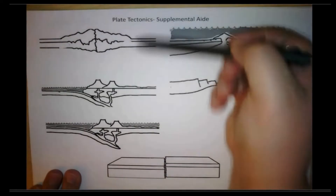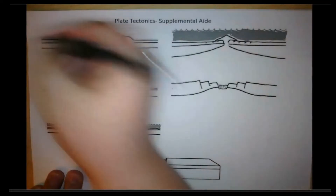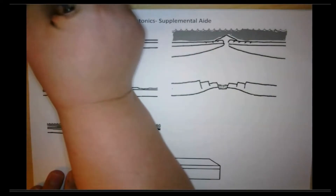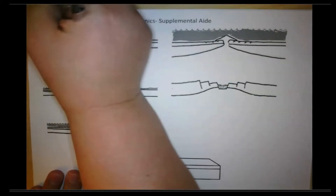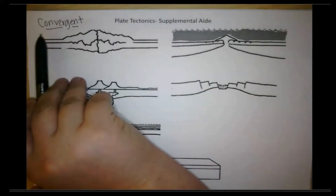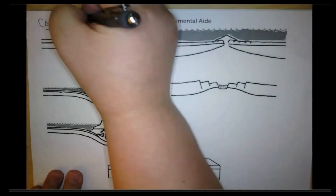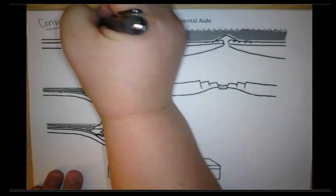The first thing we're going to start with is the convergent boundaries here on the left side. Here at the top, we're going to write convergent, and this is going to apply to all three of these. Now when we think of convergent, I want you to think of that C, and we're going to think of come together. So here in parentheses, I want you to write come together.